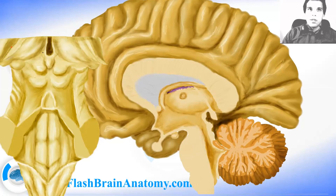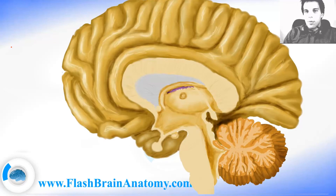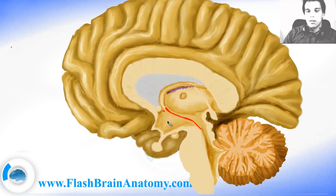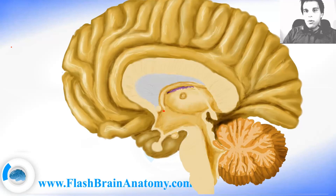The last part of the epithalamus is the habenular trigone. Then the subthalamus is caudal from the thalamus. Another part of the diencephalon is the thalamus itself, which also has more parts. The fourth part of the diencephalon is the hypothalamus. The border here is the subthalamic sulcus. It includes the mammillary bodies, the infundibulum, and the pituitary gland. It also includes the optic chiasm, though you cannot see it here from this perspective because it is cut.